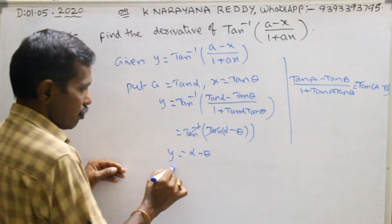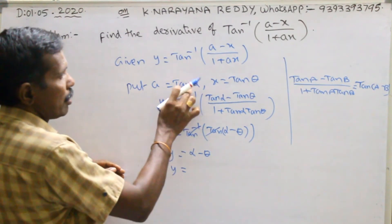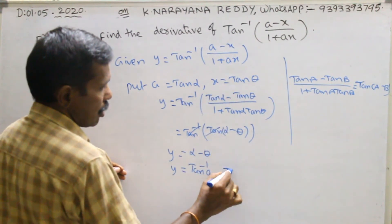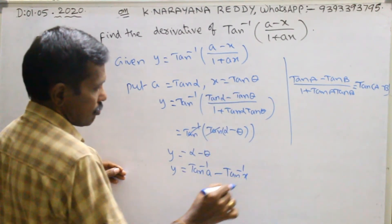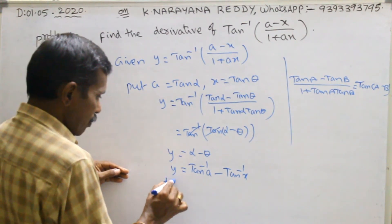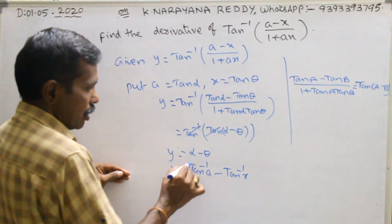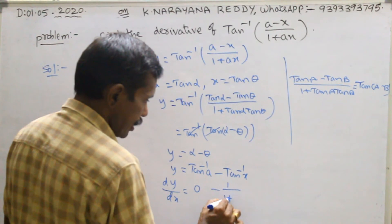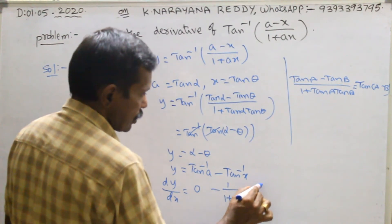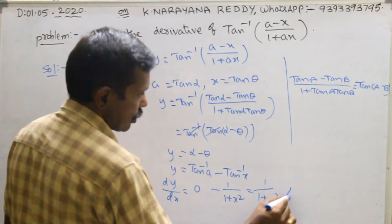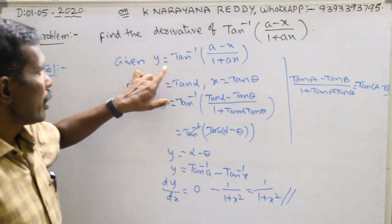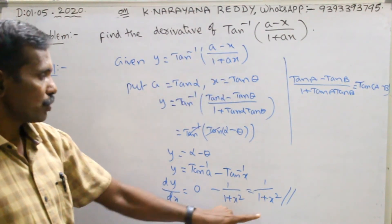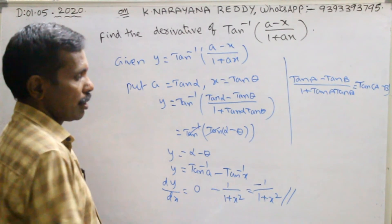What is alpha? y equals to alpha minus theta, where alpha is nothing but tan inverse a, and theta is nothing but tan inverse x. Now, dy by dx equals to: the derivative of tan inverse a is 0 because a is constant, and the derivative of tan inverse x is 1 by 1 plus x square. Therefore, the derivative of tan inverse of a minus x by 1 plus ax equals minus 1 by 1 plus x square. That is the required answer.